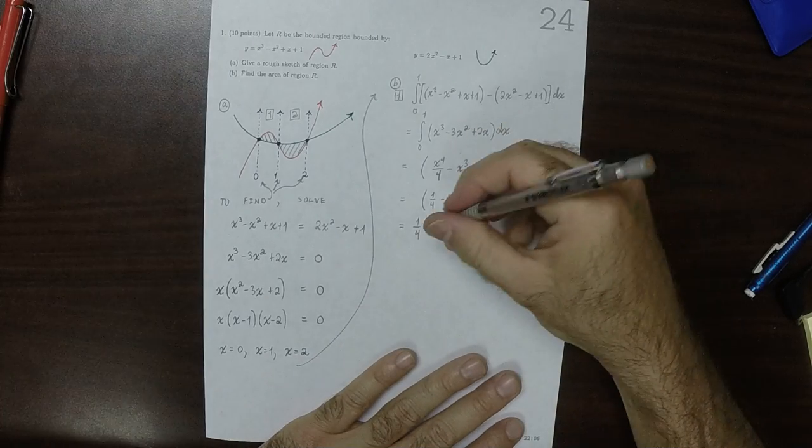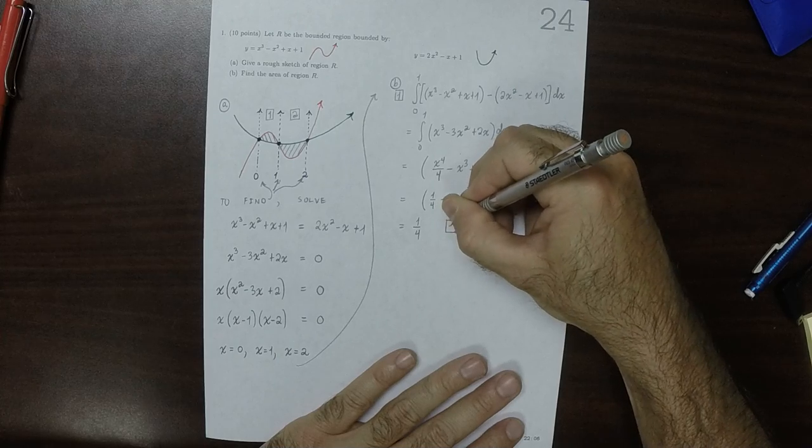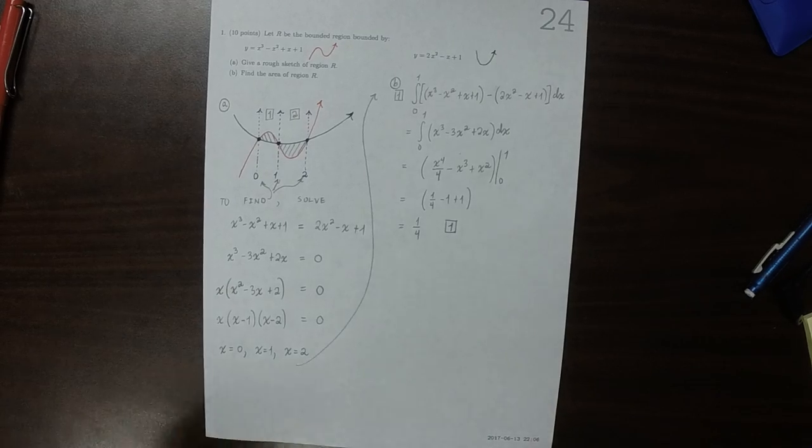So region 1 contains 1 fourth area. Not much.